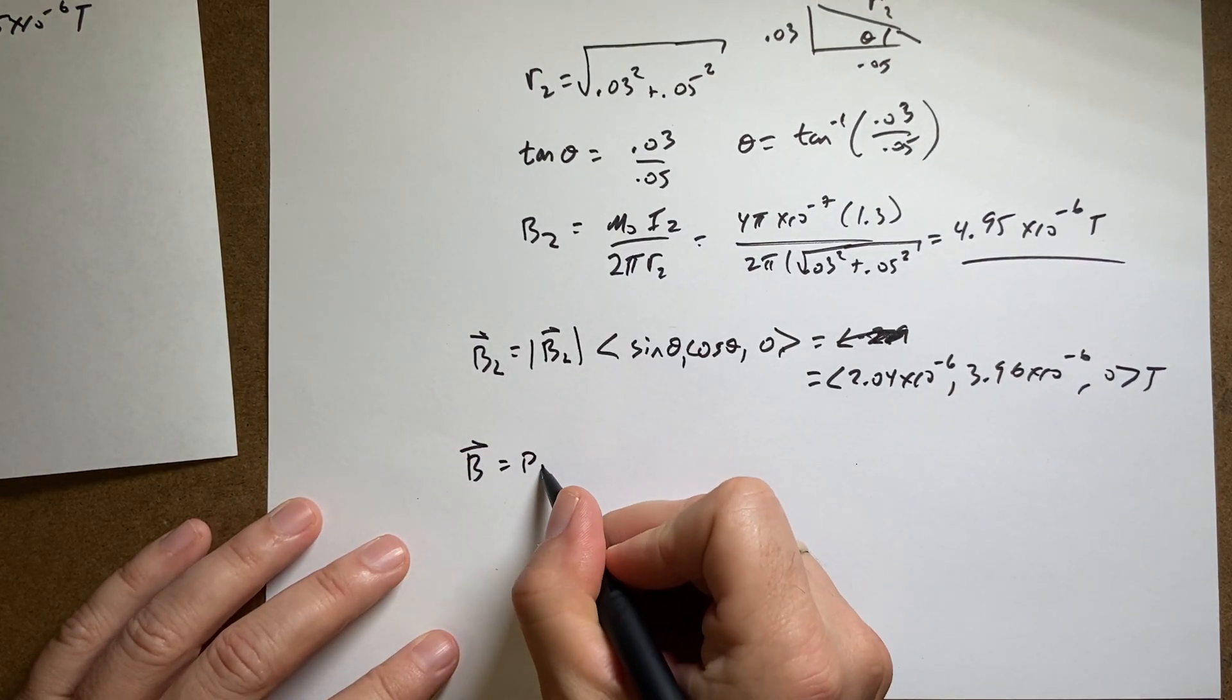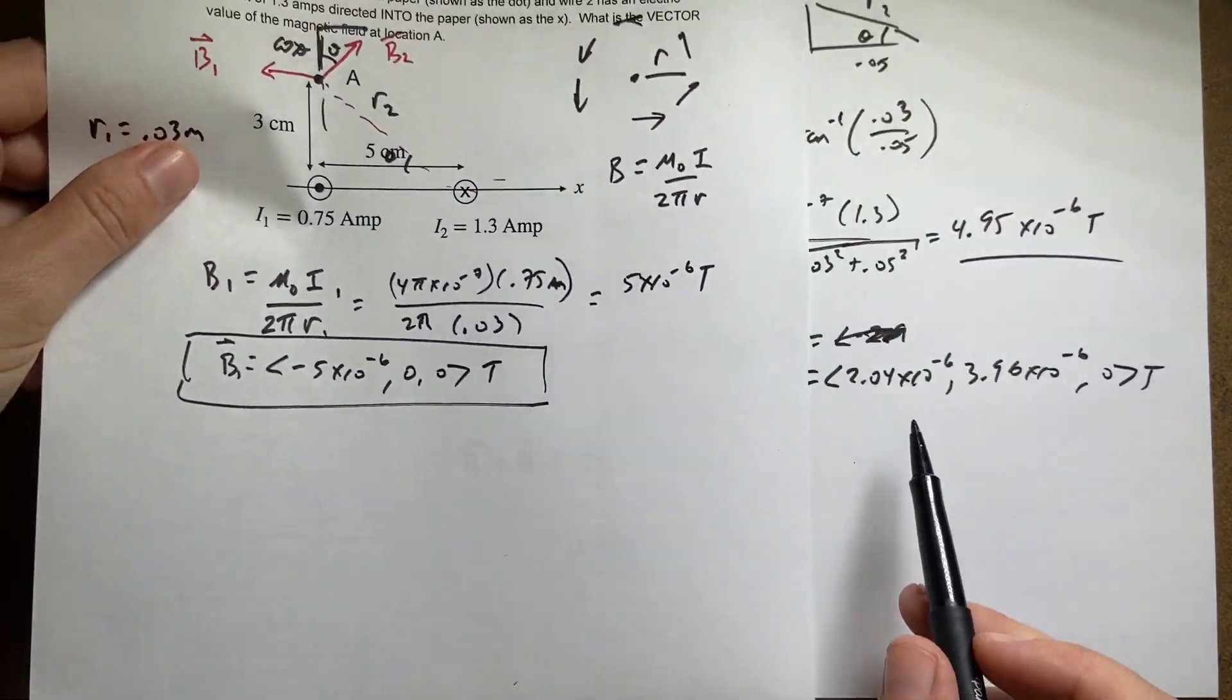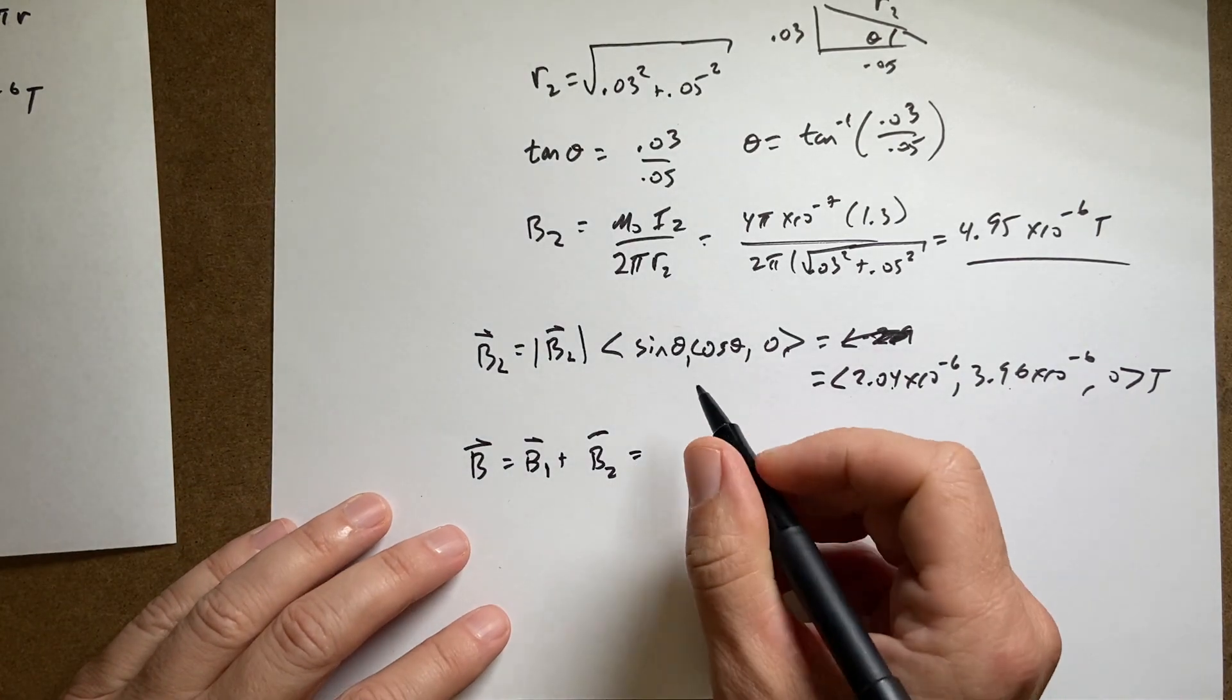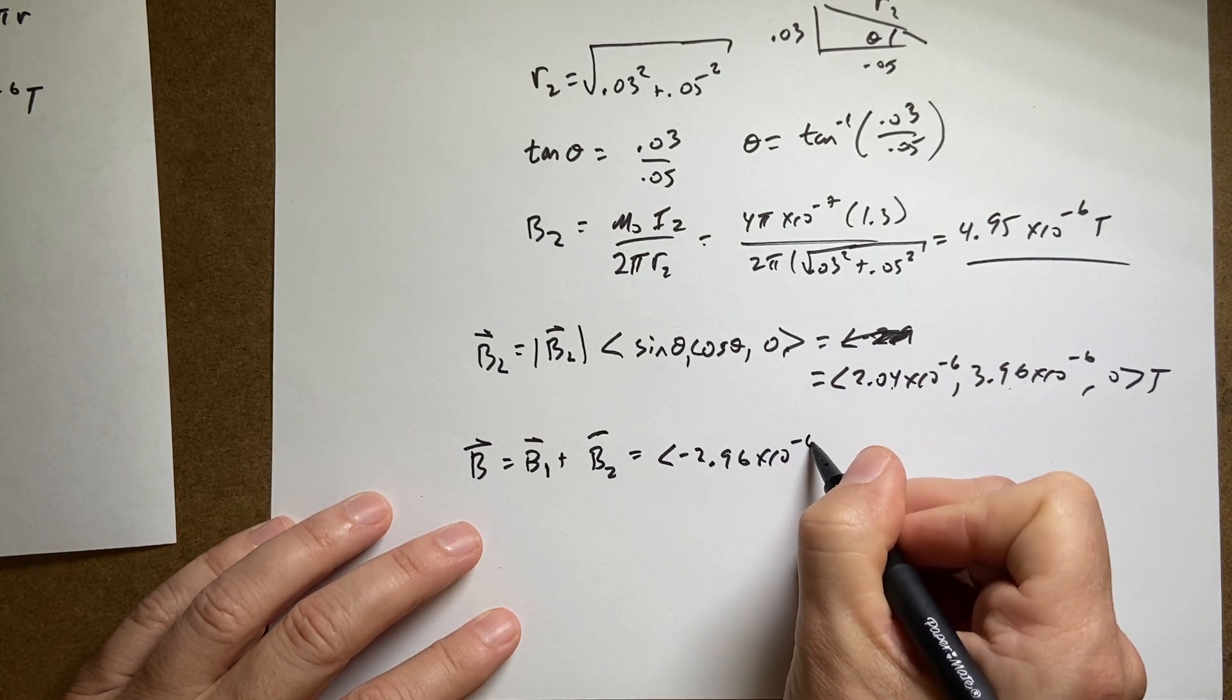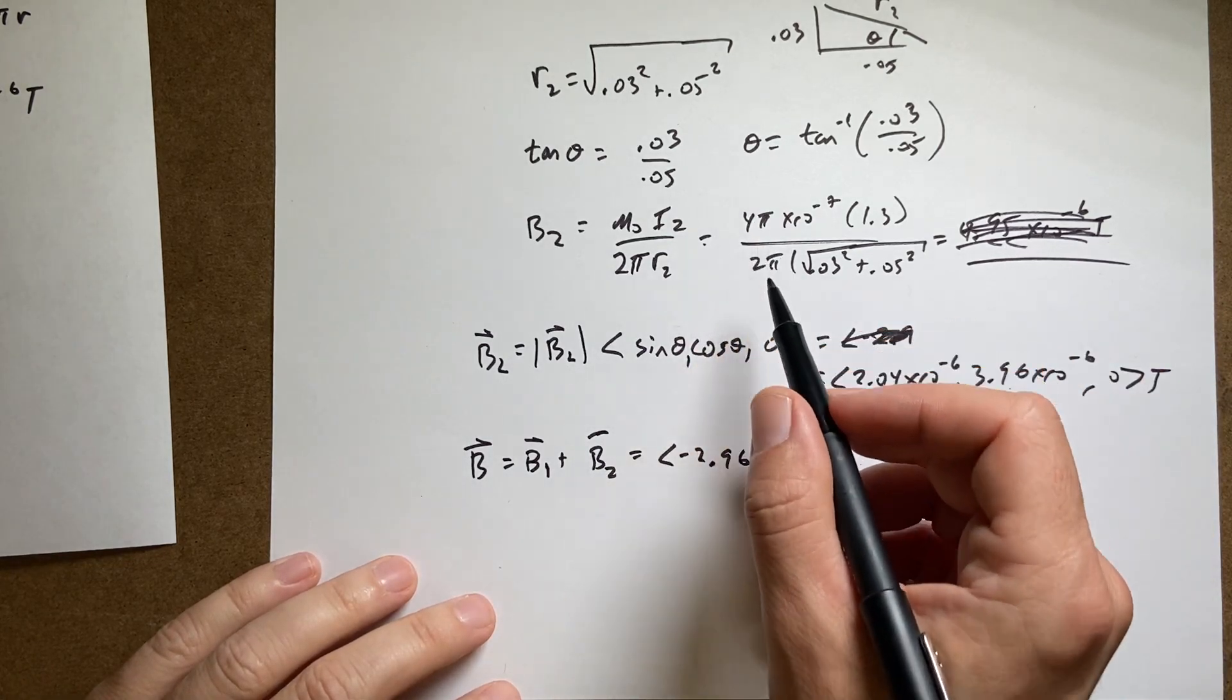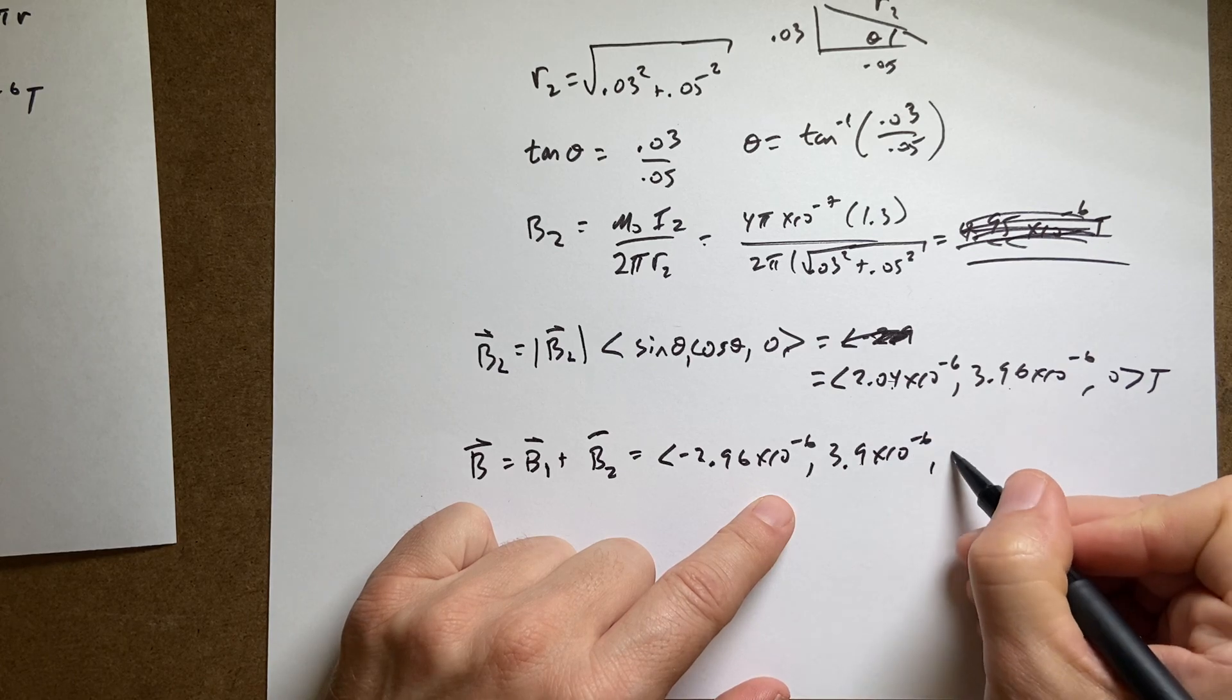Now I can find the total magnetic field. B equals B₁ plus B₂. I have both in component form, so all I need to do is add the x components, add the y components, add the z components. Y and z are easy because those are zero. I get (-2.96 × 10⁻⁶, 3.9 × 10⁻⁶, 0) Tesla.